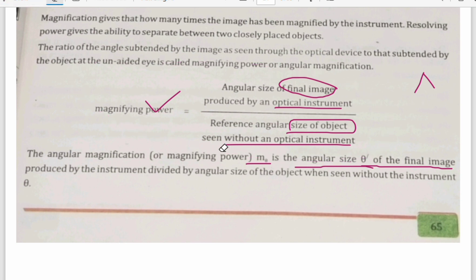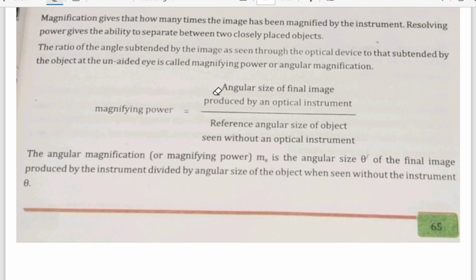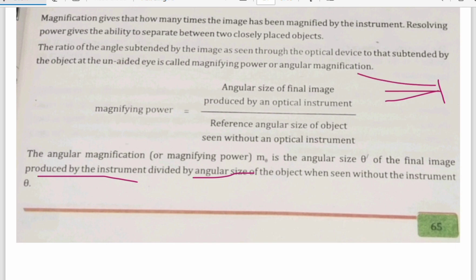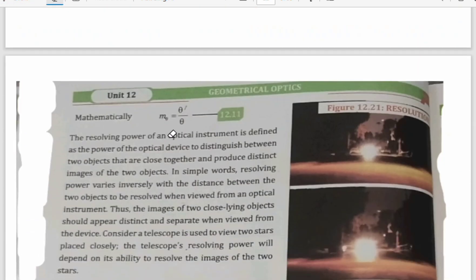The angular size of the final image produced by the instrument or optical device is divided by the angular size of the object. Whatever angle you are standing at and viewing it — 90 degrees, 120 degrees — they are mentioning angular size. The angular size of the object when seen without the instrument is theta (θ), and with the instrument it is theta-bar (θ̄). So magnification M0 equals theta-bar over theta: M0 = θ̄/θ.